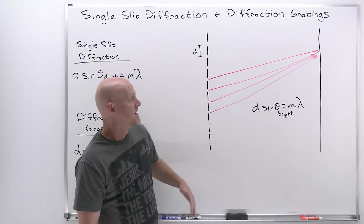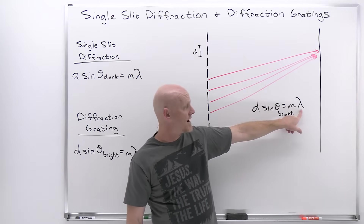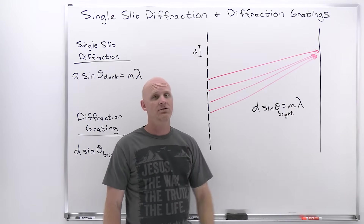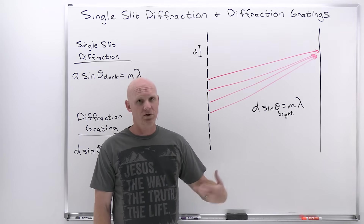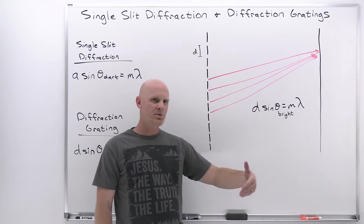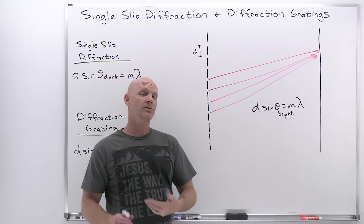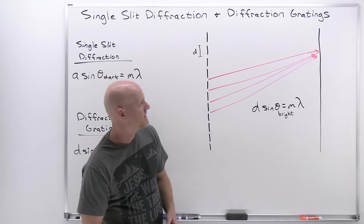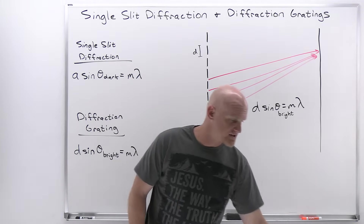Based on where the fringes are located, you can calculate the wavelength of light passing through. If you have multiple wavelengths, you'll get multiple first-order, second-order, and third-order fringes, and you can calculate each of those wavelengths from where they appear.